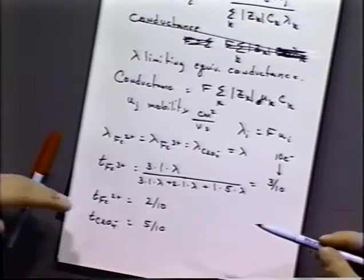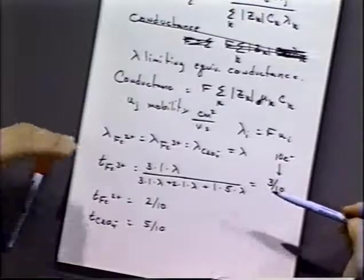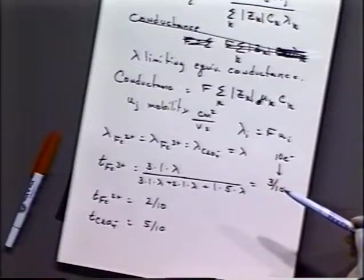So let's review. We've just calculated transference numbers and we've assumed there's ten electrons being transferred. So of those ten electrons, three will be carried by the movement of iron three plus, two will be carried by the movement of iron two plus, and five of the electrons will be carried by the movement of perchlorate ion. Now of course, that's just the way we're saying it. There's not going to be actual physical carrying of these electrons, but that's equivalent to that being true.